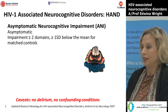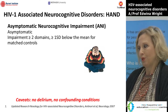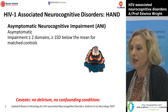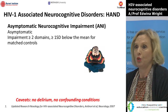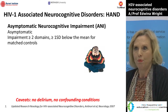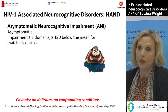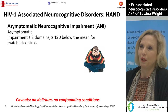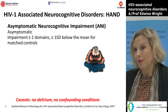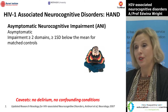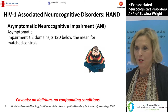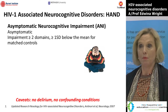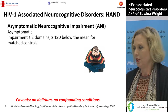Under the umbrella of HAND there are three disorders. The first is called asymptomatic neurocognitive impairment, or ANI. It's almost more a research term — an individual might say they're fine, they're well, they're working, they have no problems. But when you do a neuropsychological test battery, you may find that compared to their HIV-negative age and gender-matched controls in the community, they are actually performing under par, even though they have no symptoms.